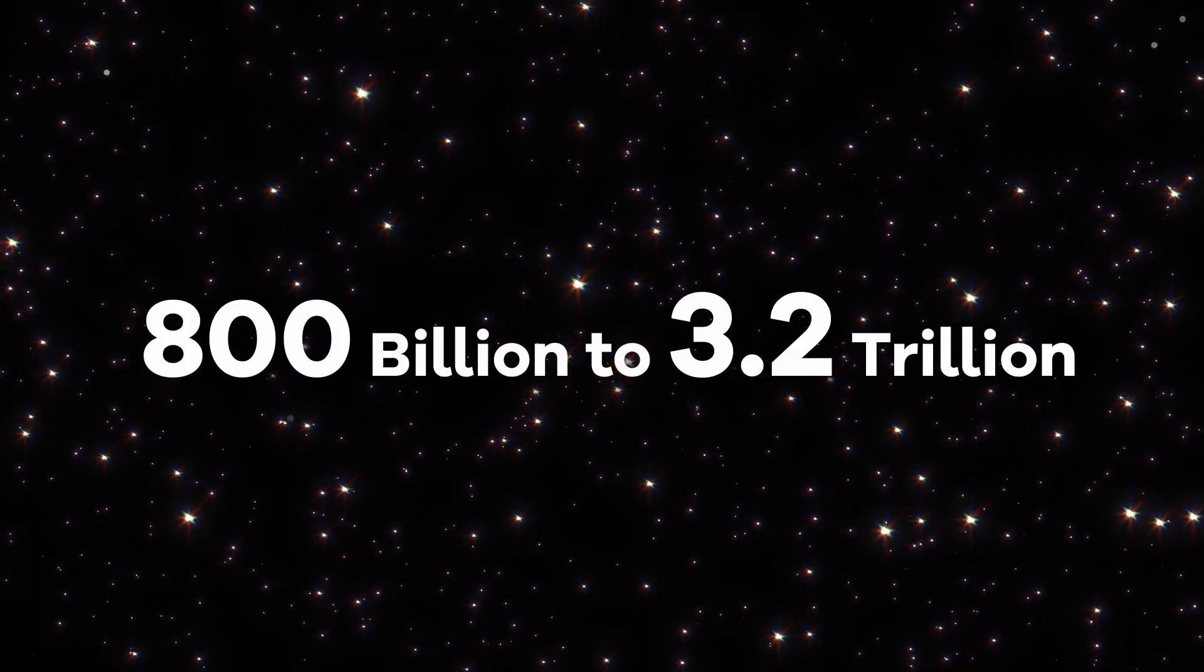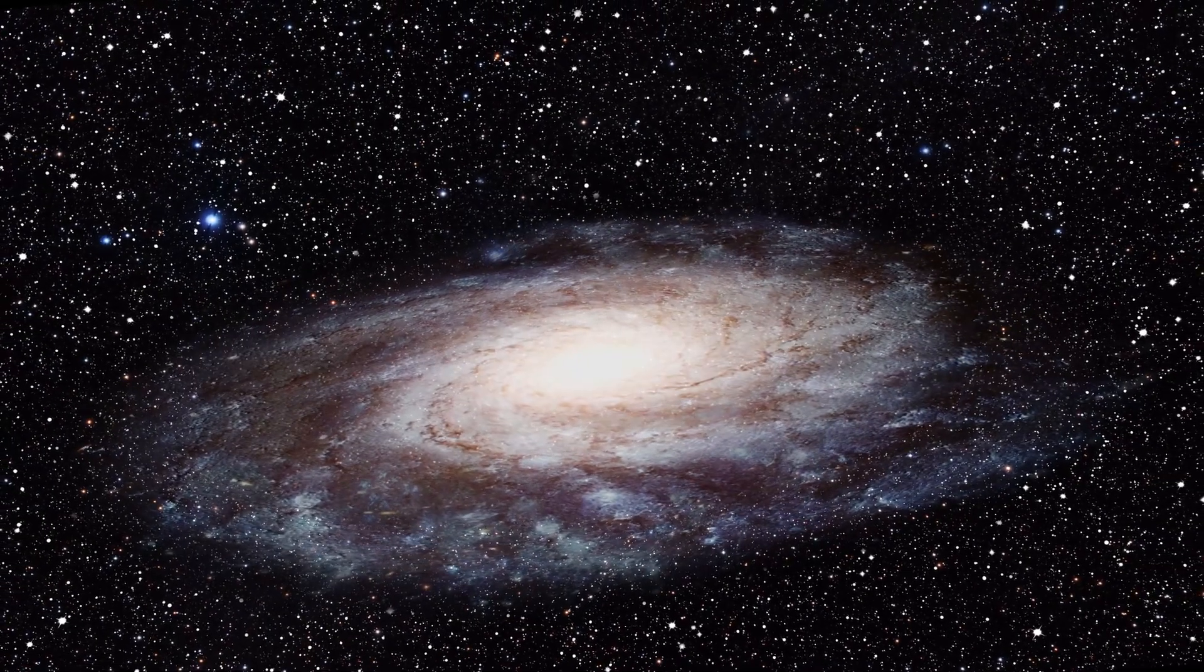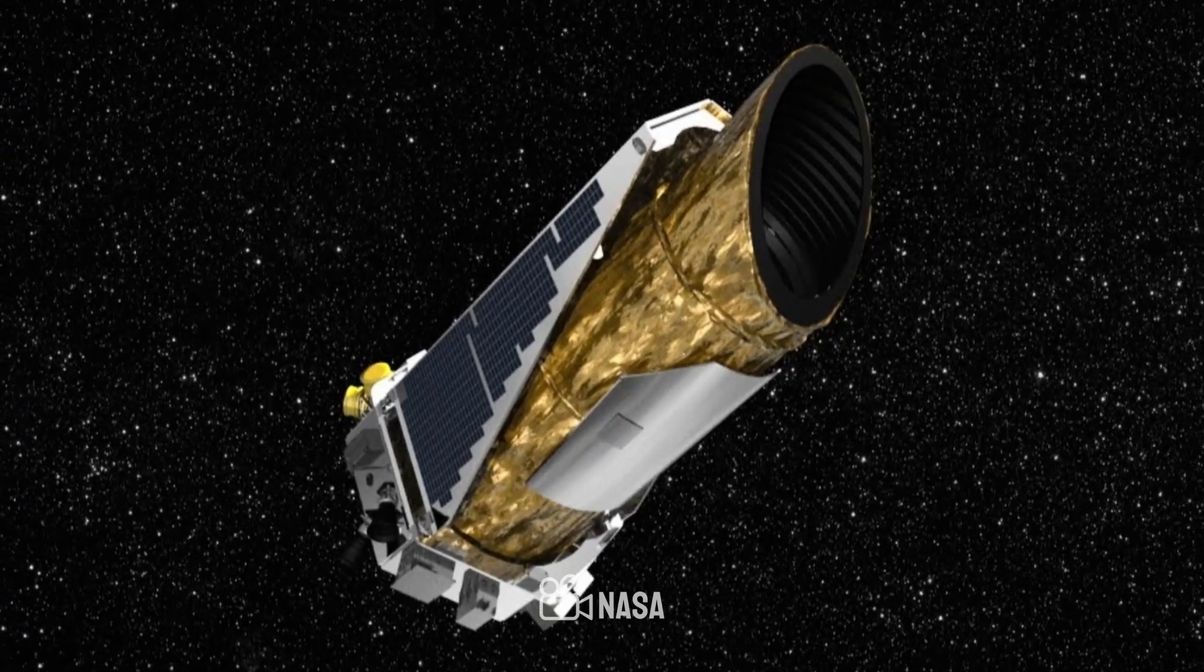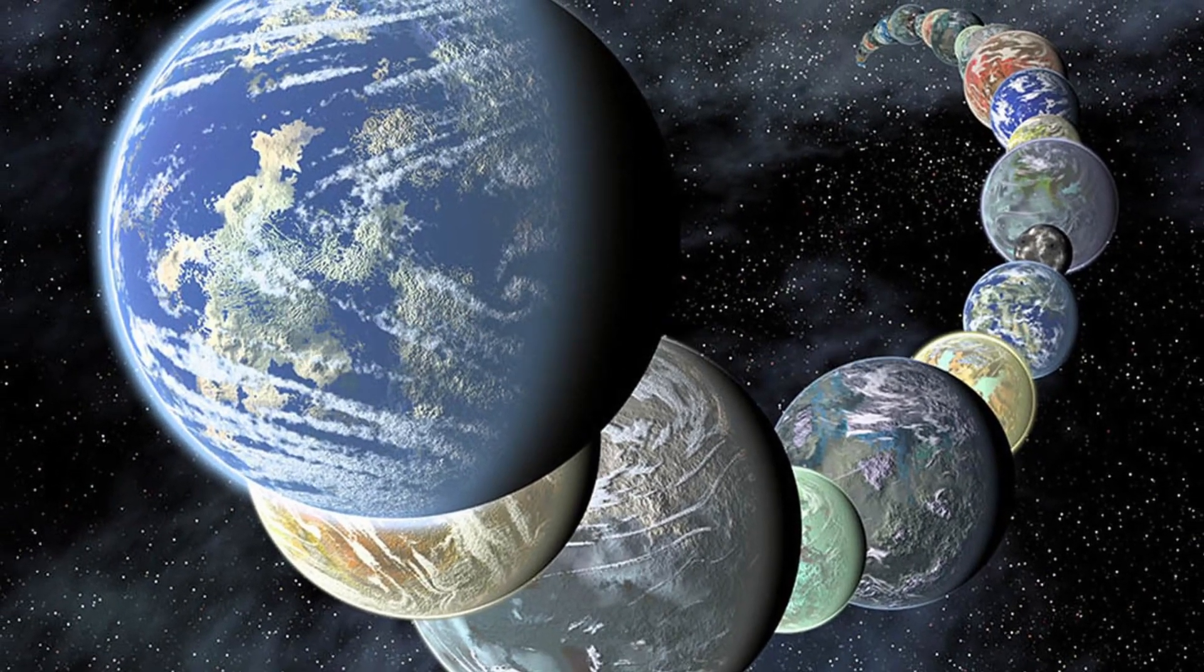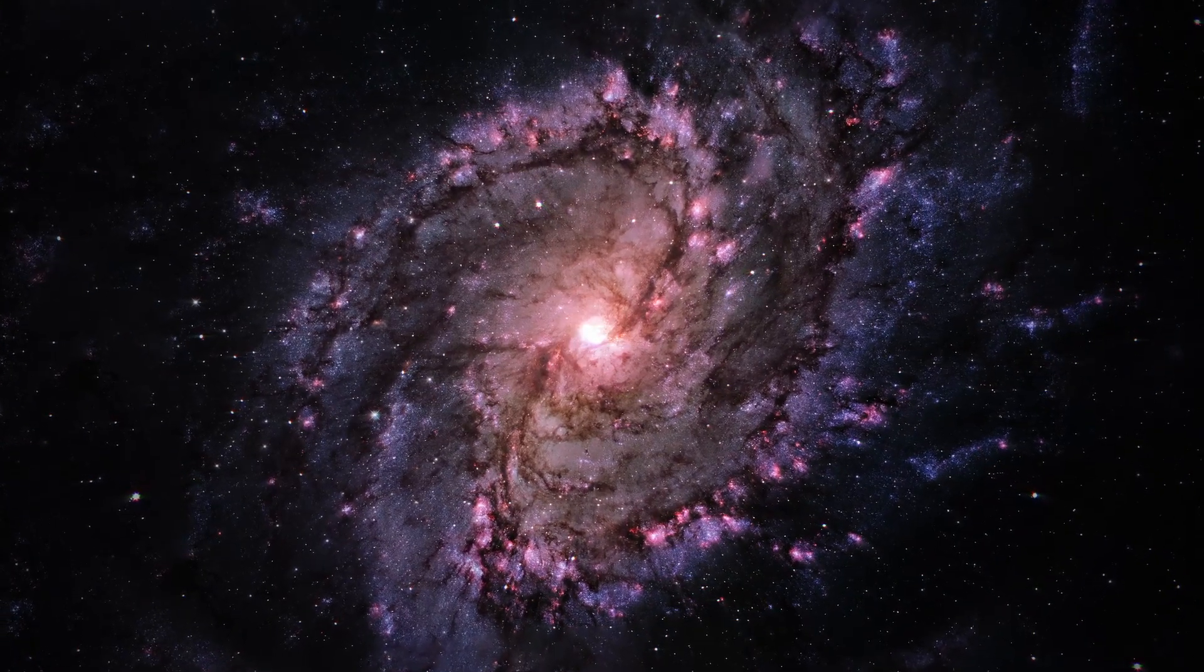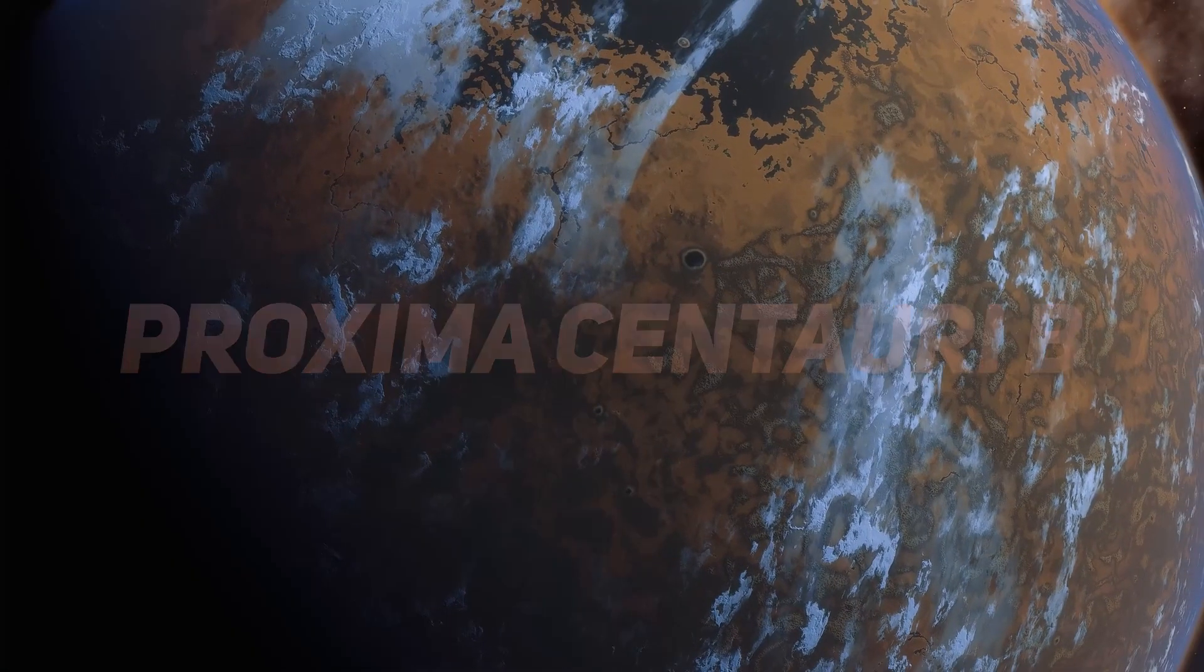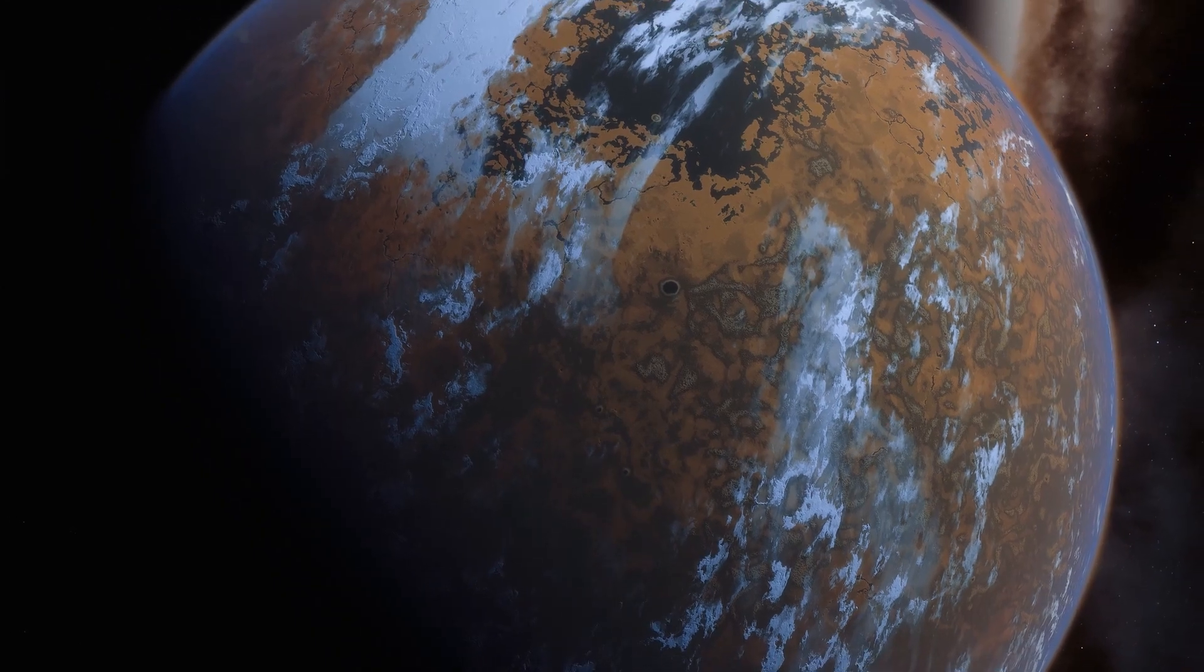There are on average between 800 billion to 3.2 trillion planets in our own galaxy. Based on the findings of the Kepler team, there are at least 500 million planets in the habitable zone. In this video, we dive deep into a planet called Proxima Centauri b and learn more about it, so keep watching till the end.